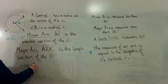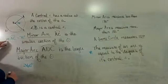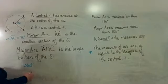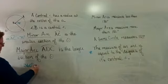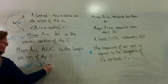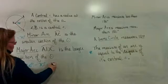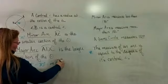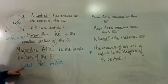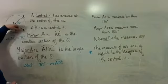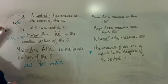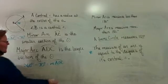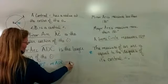If the measure of minor arc AC is 70 degrees, then you can say 360 minus 70 degrees equals the measure of arc ADC. Take the full 360, remove the 70, and what's left is the measure of arc ADC, which in this case is 290 degrees.